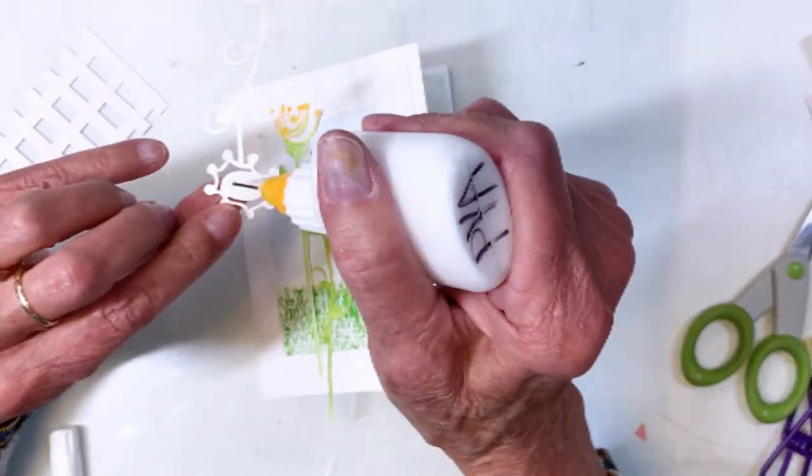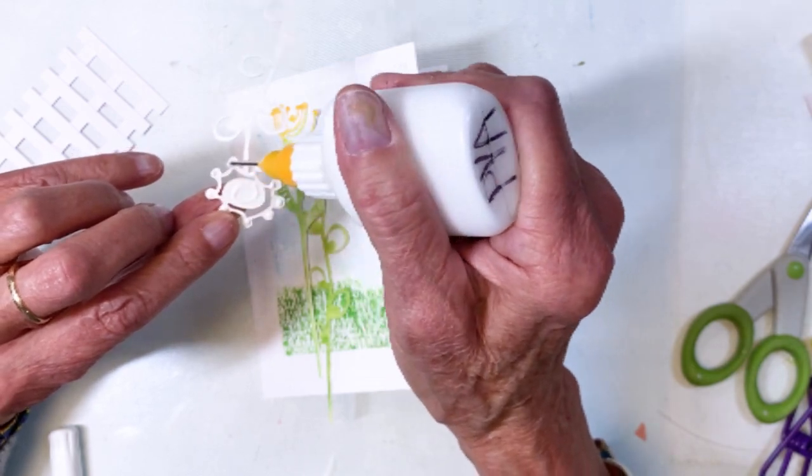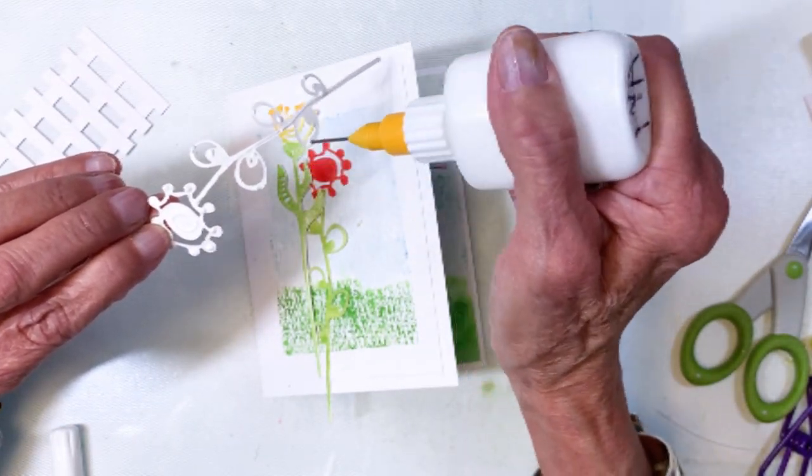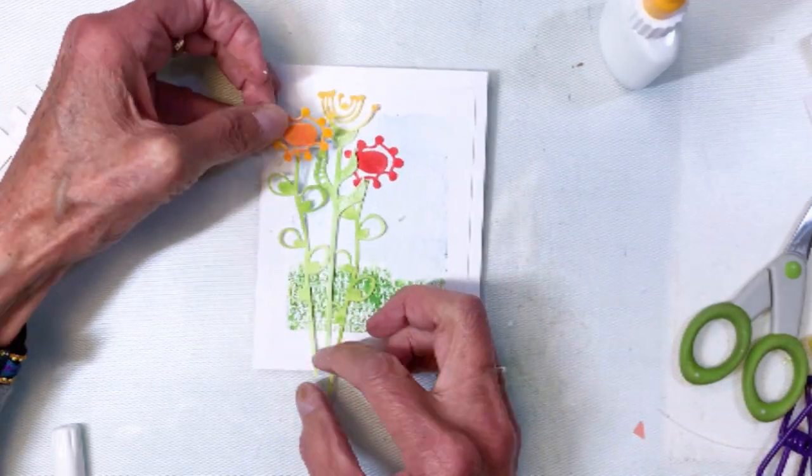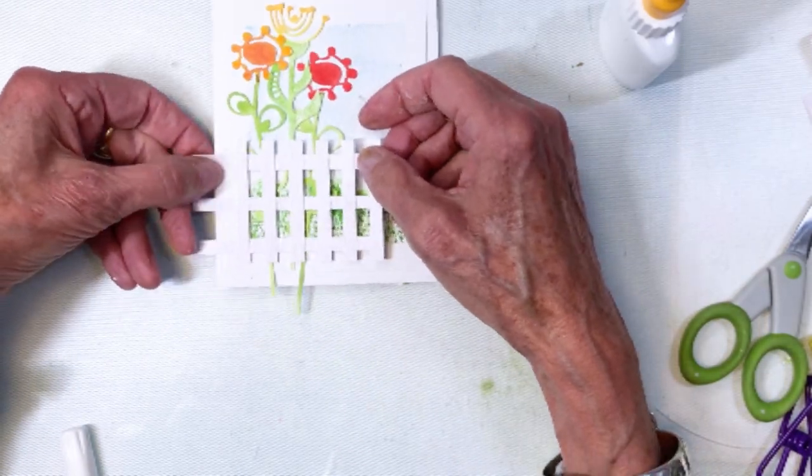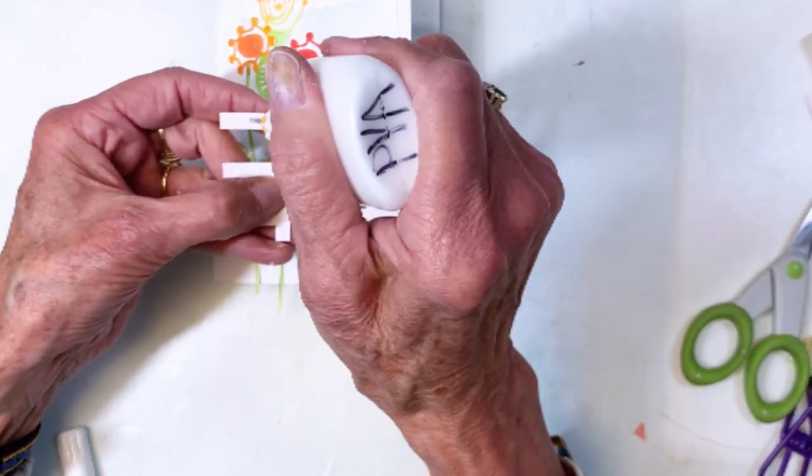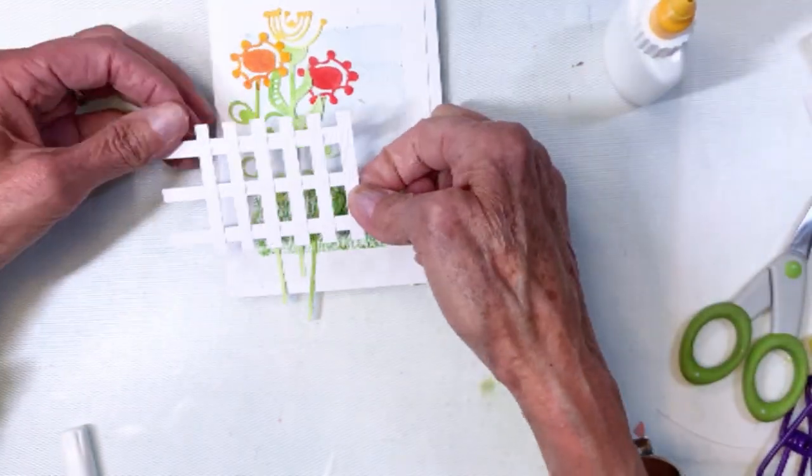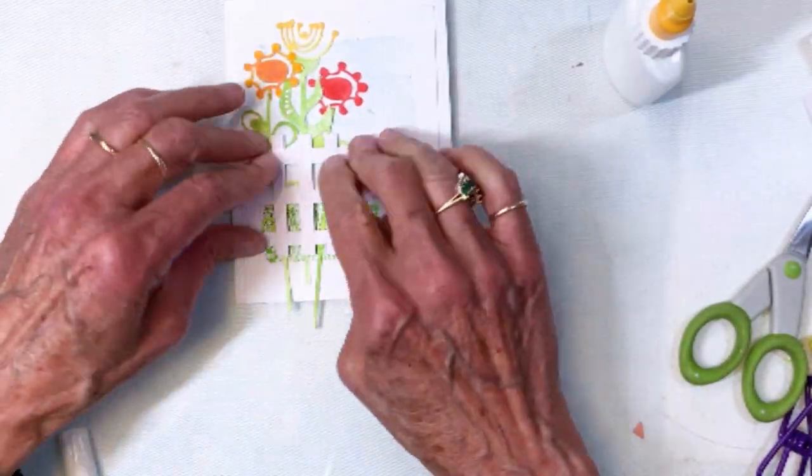And you can see off to the left there kind of underneath my hand there is another picket fence piece that I created. Again using the same size pieces for the posts. So again I wanted to add that to the front of the card. You've got a picket fence on the inside. I needed one on the outside.